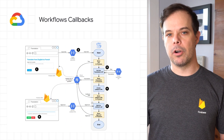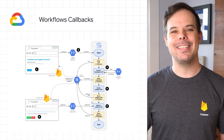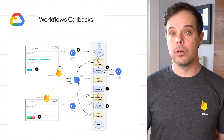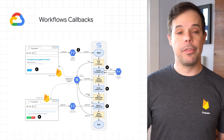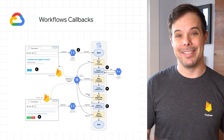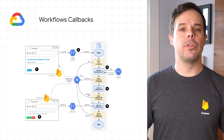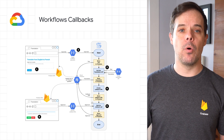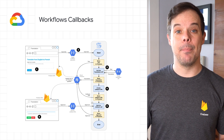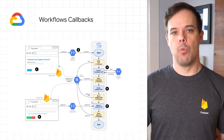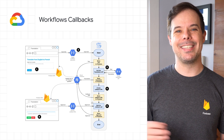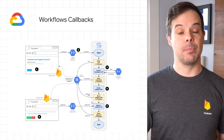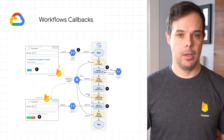With Workflows, you can easily orchestrate various services together on Google Cloud or third-party APIs. And now, with Workflows Callbacks, you can avoid API polling. A workflow can instead wait until it receives a call to a specific callback endpoint.